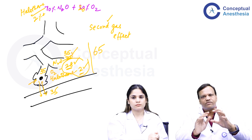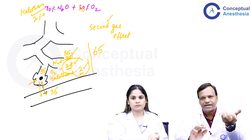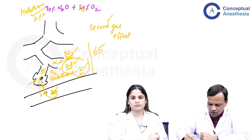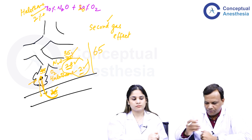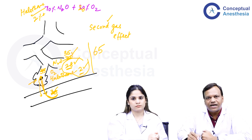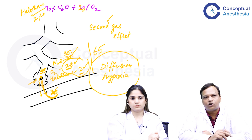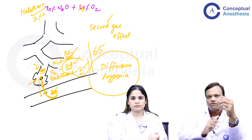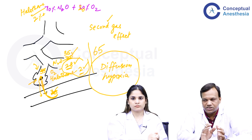When we stop nitrous oxide and the patient has to recover, the nitrous oxide that is dissolved in blood will quickly diffuse back out into the alveoli because we are no longer giving it. A large amount coming back into the alveoli dilutes the oxygen present there, resulting in diffusion hypoxia. This is a problem with nitrous oxide — it can cause diffusion hypoxia during recovery. To prevent this, whenever we stop nitrous oxide we should give 100% oxygen for a few minutes first, even though diffusion hypoxia is short-lasting.